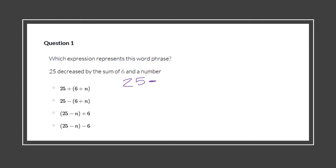The phrase continues: 'decreased by the sum of six and a number.' The word 'sum' means add, but it's decreased by the sum of those two, so I have to do the sum first. I need to put parentheses around those. So: 25 decreased by the sum of six and a number, written as 25 − (6 + n). Here is my answer.